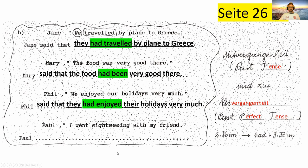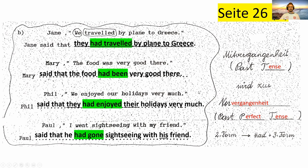Paul: 'I went sightseeing with my friend.' Das Zeitwort hier ist 'went'. 'Went' wird zu 'had gone'. Paul said that he had gone sightseeing with his friend. Also hier konzentrieren wir uns nur auf die Zeitwörter — ihr merkt aber, dass auch andere Wörter sich verändern; diese anderen Wörter müsst ihr noch lernen.